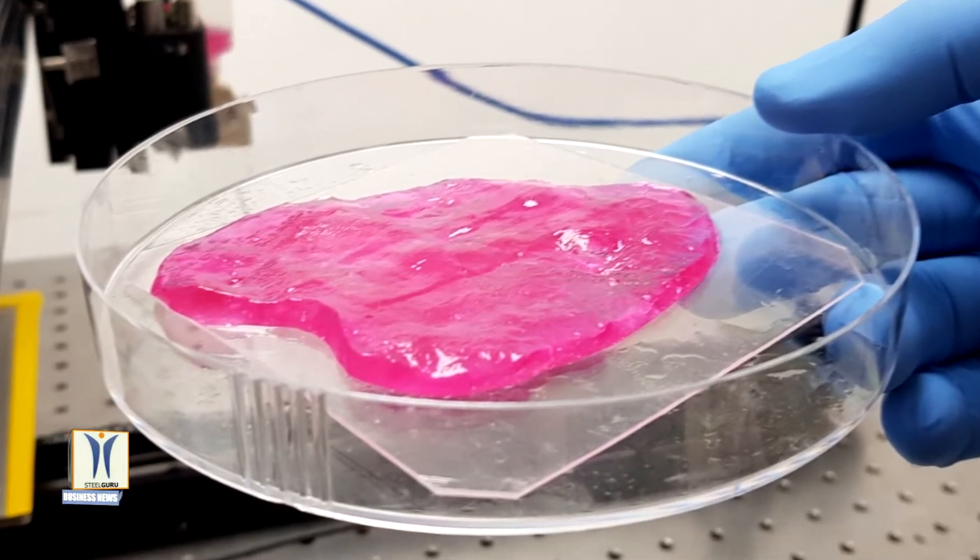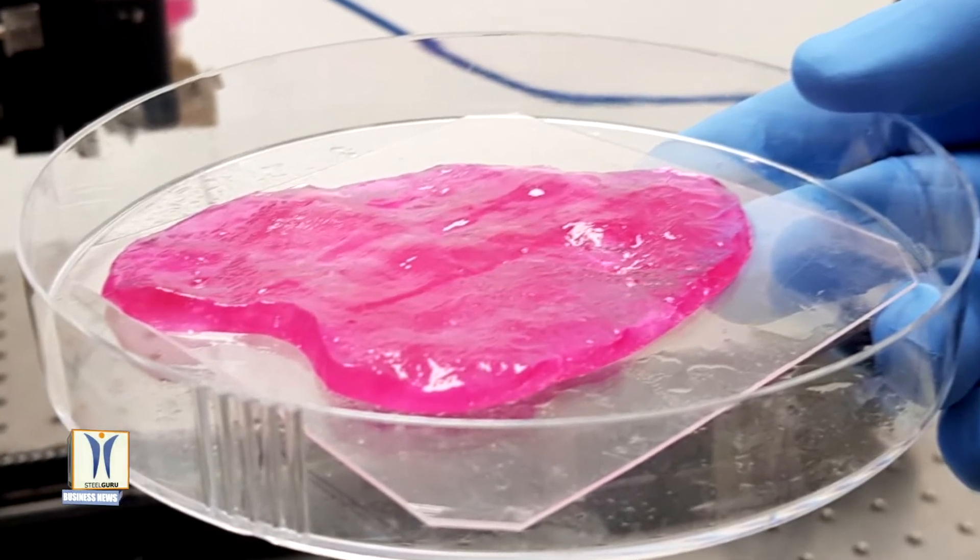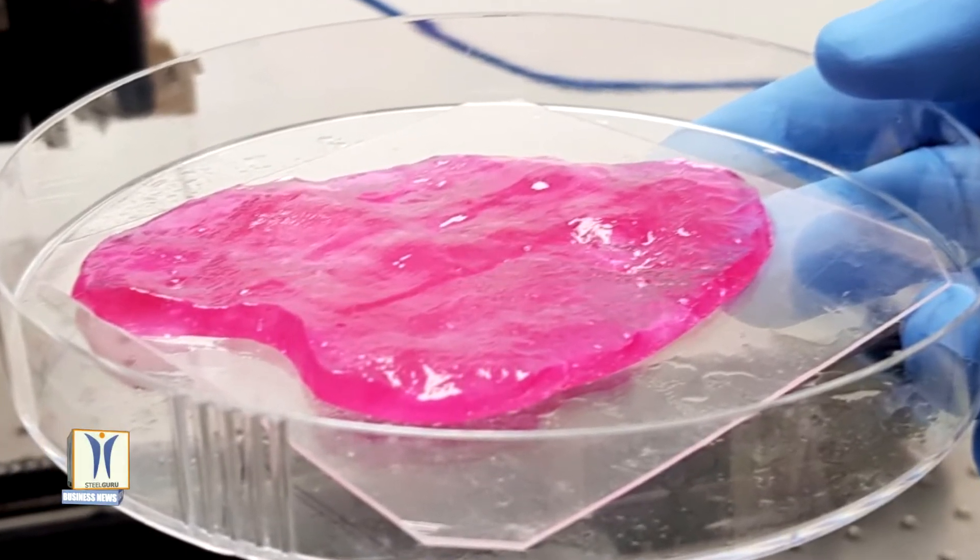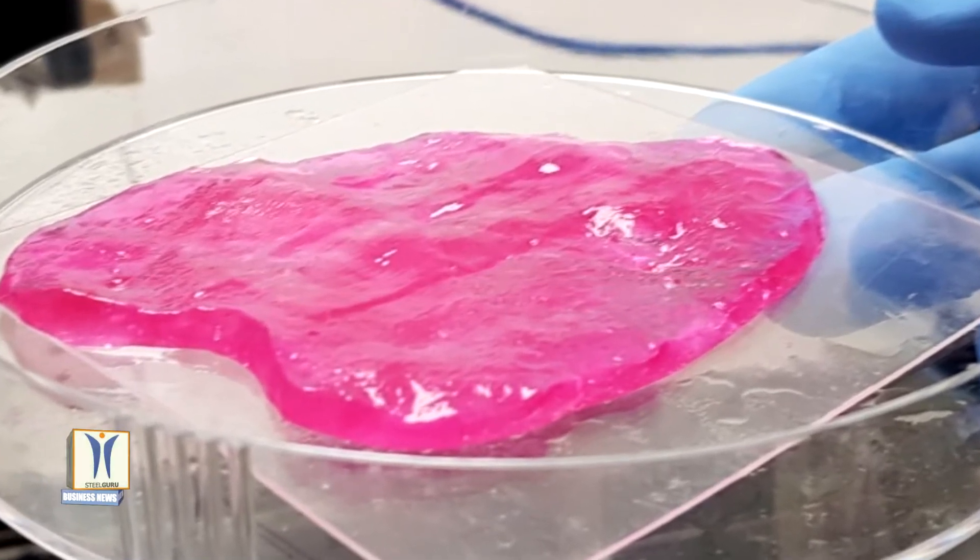The company takes a sample of stem cells from an animal, reproduces these cells, and divides them into different meat components, aiming to 3D print the cultured meat in an accurate shape and structure.